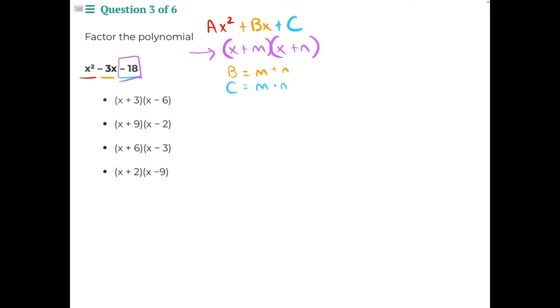What we'll need to do is create a factor tree for the number negative 18, because we need to find two numbers that when multiplied together will give us negative 18, but when added together will give us our b value of negative 3. So we need to find possible pairs of numbers that could be factors of negative 18.